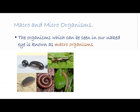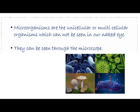Let's see what macro and microorganisms are. Macroorganisms, which can be seen with the naked eye, are known as macroorganisms. Soil organisms such as ants, beetles, millipedes, and centipedes are considered as macroorganisms. Microorganisms are the unicellular or multicellular organisms...